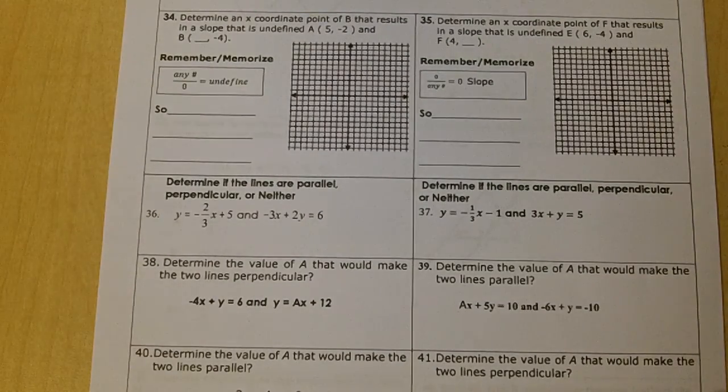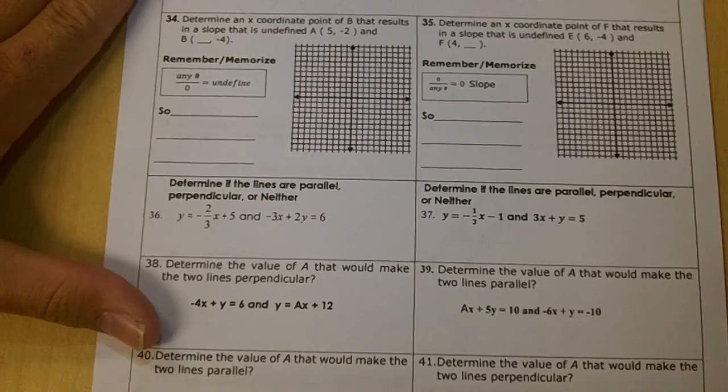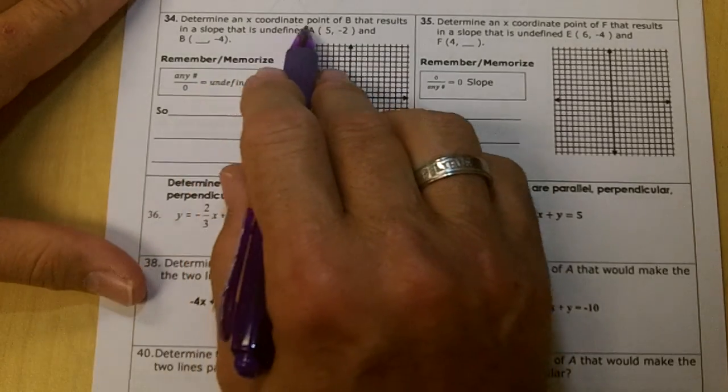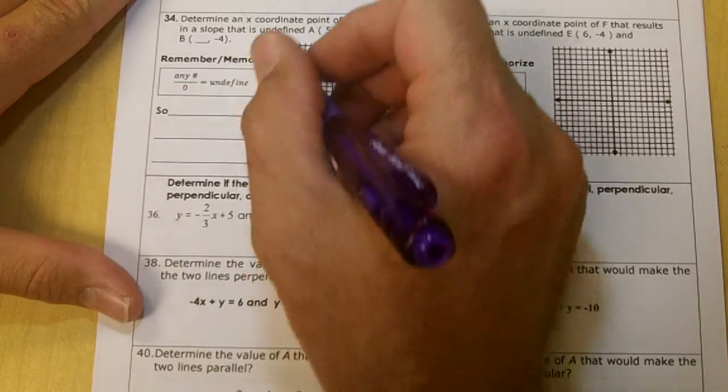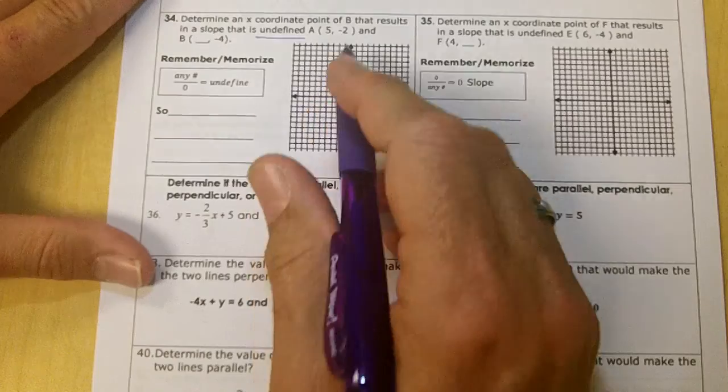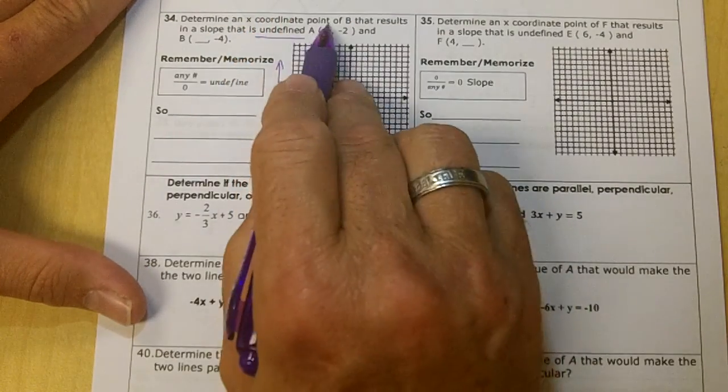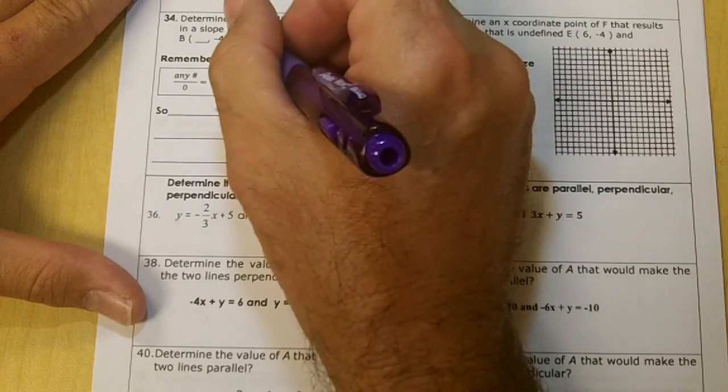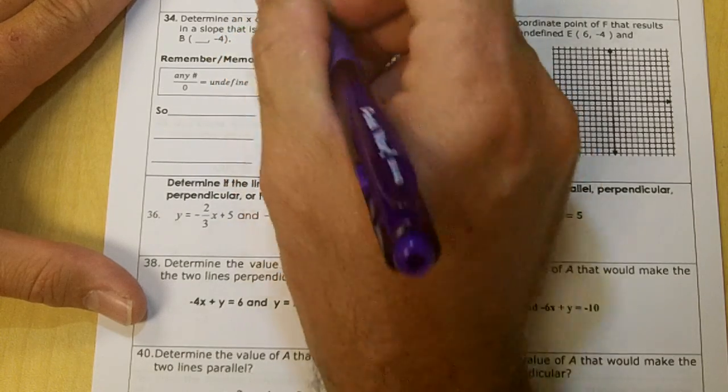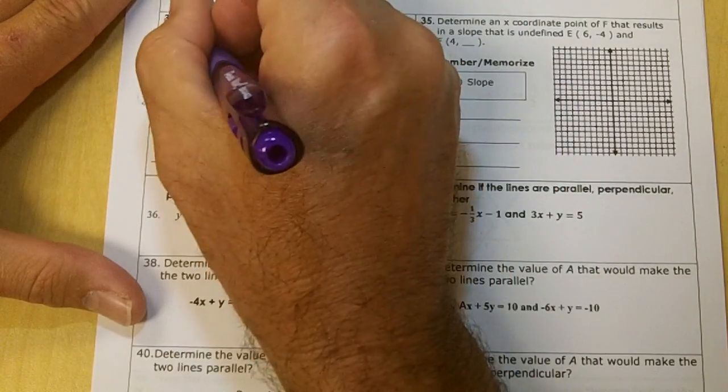Okay, we're going to number 34. Determine an x-coordinate of B that results in a slope that is undefined. An undefined slope goes straight up and down, doesn't it? So the 5 is going to repeat. In an undefined, the x repeats. So the answer is going to be 5.